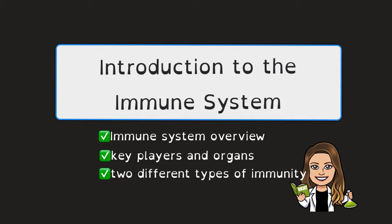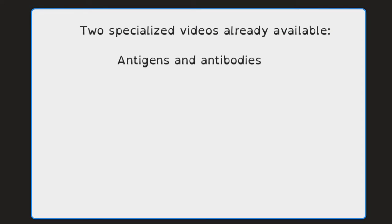As I make this video, I already have two specialized videos out — one on the relationship between antigens and antibodies and another one on B cells. You can check out those two videos for more specifics. This one is going to be an overview to introduce you to the idea of the immune system, what it is, two types of immunity, and the key players that are involved.